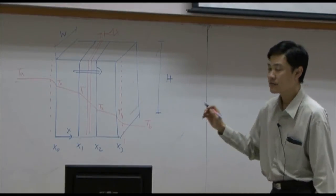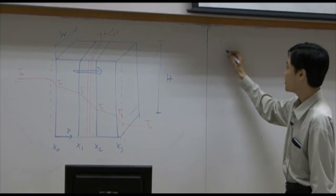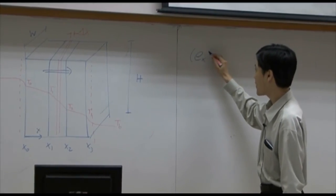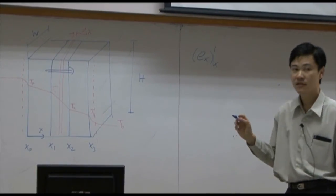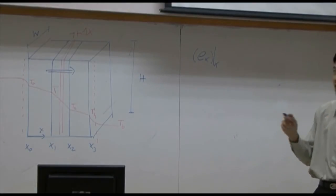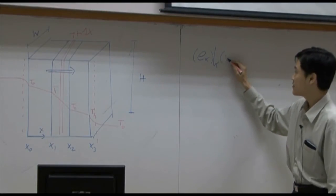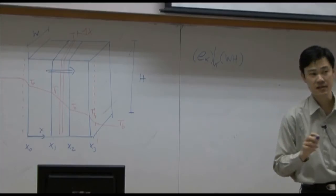So in shear balance, the input term is supposed to be e in x direction at x multiplied by area perpendicular to it. That means wh. This is the input term.